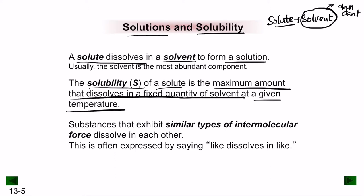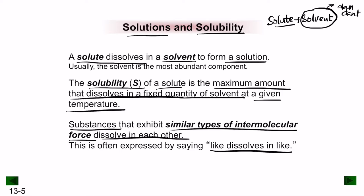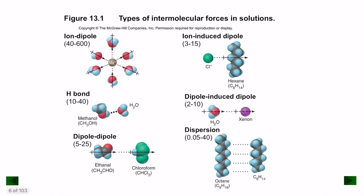Substances that exhibit similar types of intermolecular forces dissolve in each other — remember: like dissolves like. The type of forces involved characterizes what solute can dissolve in what solvent. There are six types of intermolecular forces in solutions. The most common is ion-dipole forces, for example when you mix salt into water. Hydrogen bonds occur when two polar substances mix. Dipole-dipole forces also involve two polar substances but without hydrogen bonds.